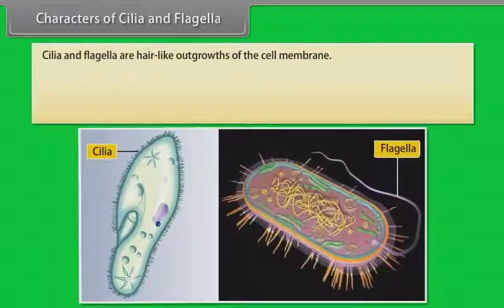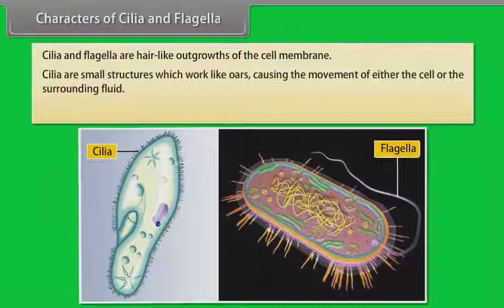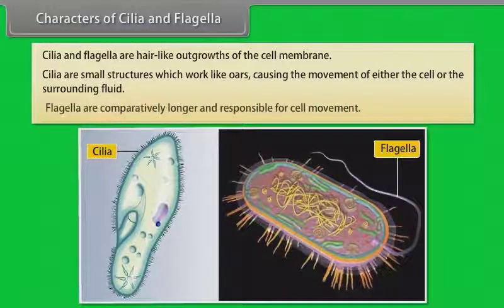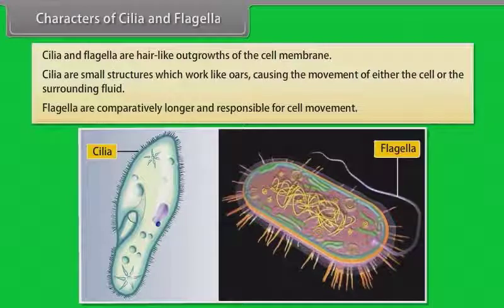Characters of cilia and flagella. Cilia and flagella are hair-like outgrowths of the cell membrane. Cilia are small structures which work like oars, causing the movement of either the cell or the surrounding fluid. Flagella are comparatively longer and responsible for cell movement.